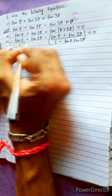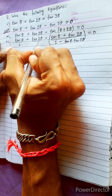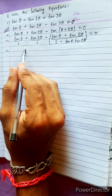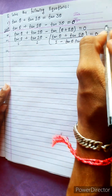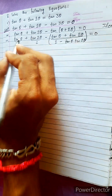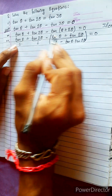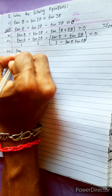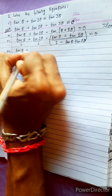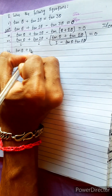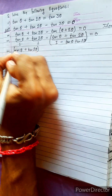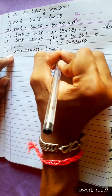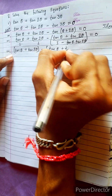Now take the LCM. We need to use a trick here — because if you take LCM across all three terms it will be very long. So treat tan θ + tan 2θ as a single term. Then here also tan θ + tan 2θ appears as one term.